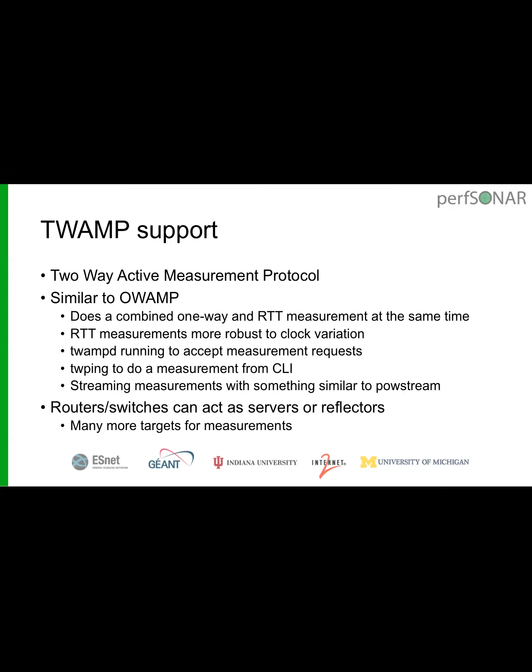Also in 4.1: support for TWAMP, the Two-Way Active Measurement Protocol. It's similar to OWAMP but handles round-trip time measurements more robustly with respect to timekeeping variations, and doesn't combine one-way and round-trip measurement simultaneously. Like OWAMP, it runs as a daemon (TWAMP-D). There will be a TWPing CLI tool and a streaming measurement tool. Crucially, TWAMP is widely implemented on routers and switches, meaning those devices can act as TWAMP servers — giving many more targets for measurements.